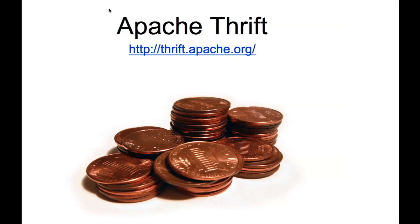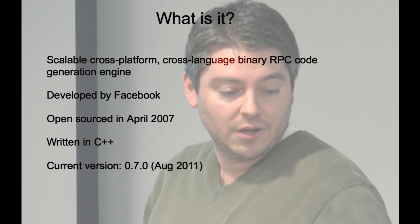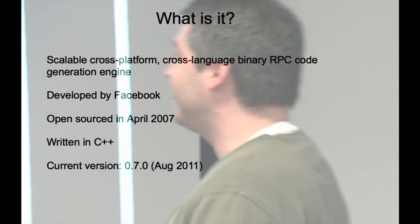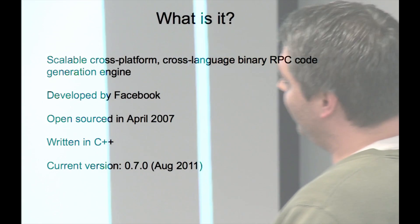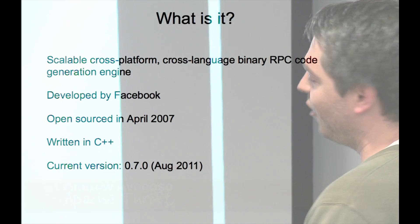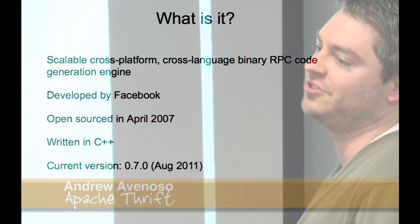I am talking about Apache Thrift. I assume some of the people in here are familiar with this, but most of you are not. Obviously it is an Apache product. So it is a scalable cross-platform, cross-language binary RPC code generation engine.